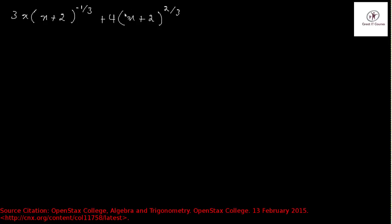Here you can see that you have a common factor (x+2). It is present in both terms, but the exponent of (x+2) in the first term is minus 1/3, and the exponent of (x+2) in the second term is 2/3. What you can do is take (x+2) raised to the power minus 1/3 out of both terms. In order to do that, you need to write (x+2) raised to the power 2/3 in terms of (x+2) raised to the power minus 1/3.